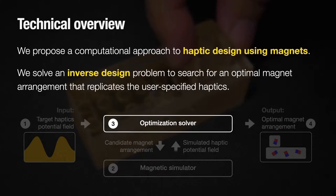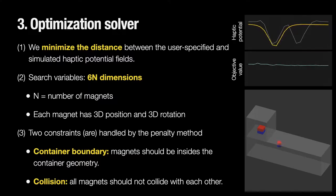Next, we formulated an optimization problem to optimize the parameter of magnets. The objective is to minimize the distance between the user-specified haptics and the simulator haptics. The search parameter is 6n-dimensional, where n is the number of magnets. This is because each magnet has the 3D position and 3D rotation as the degree of freedom. When performing optimization, our method considers two additional constraints to ensure that the found solution is valid.